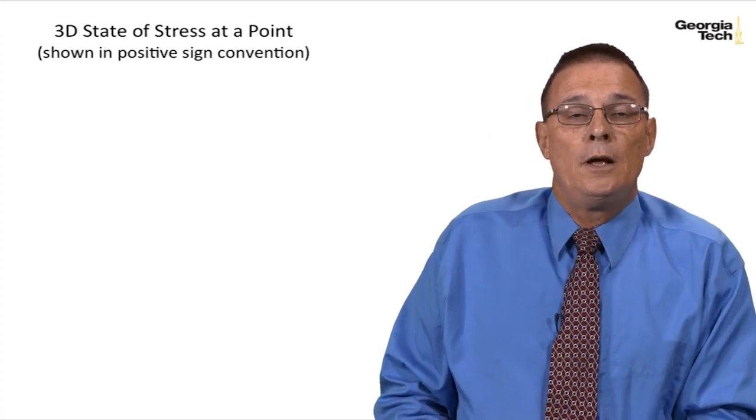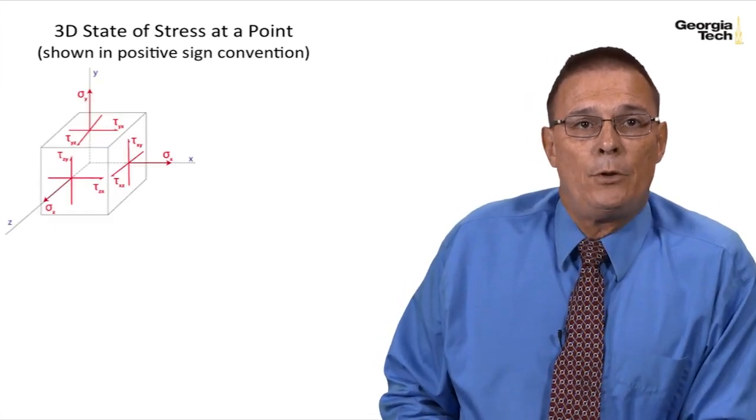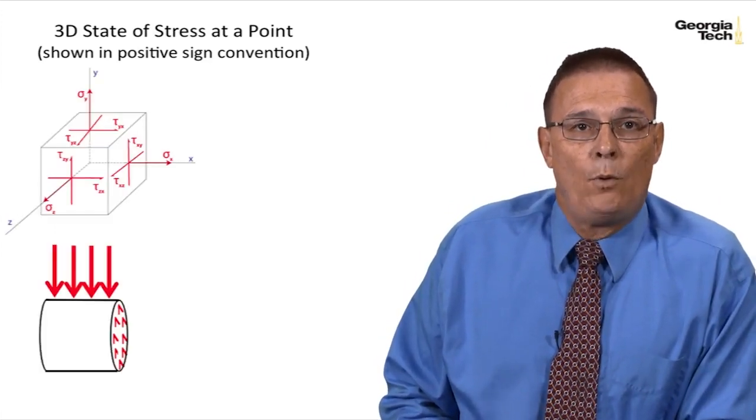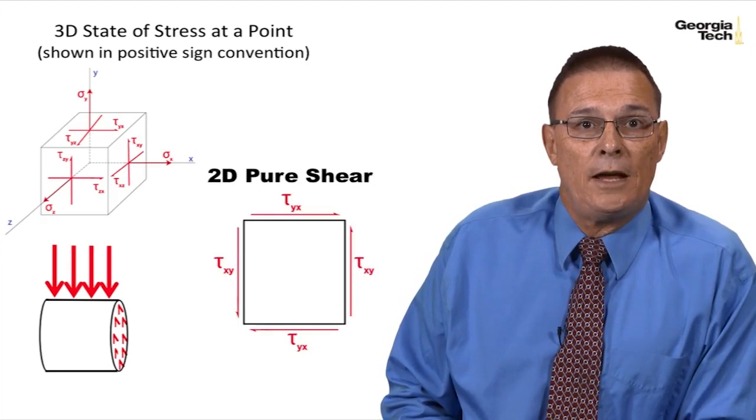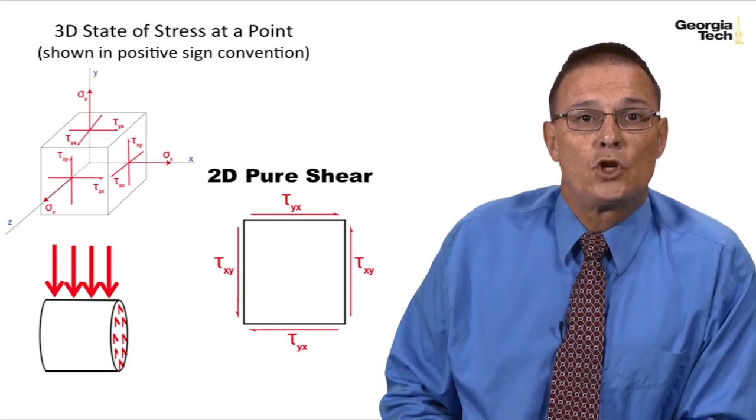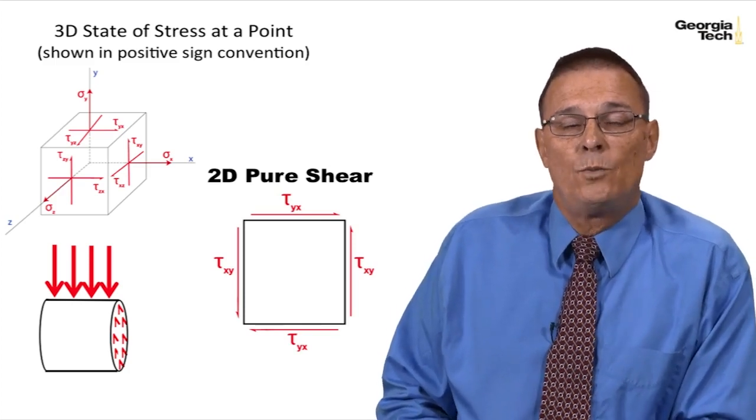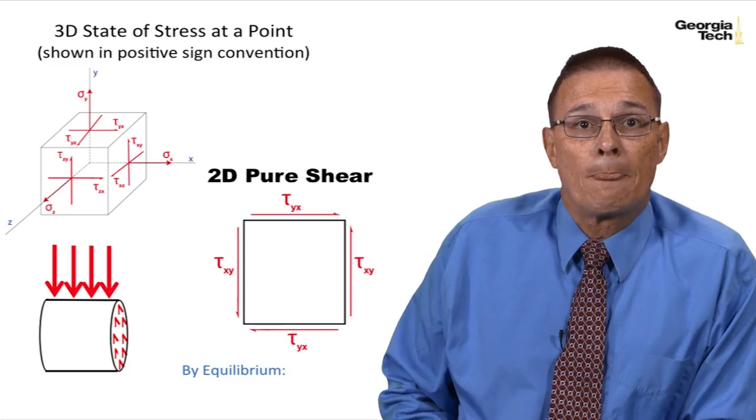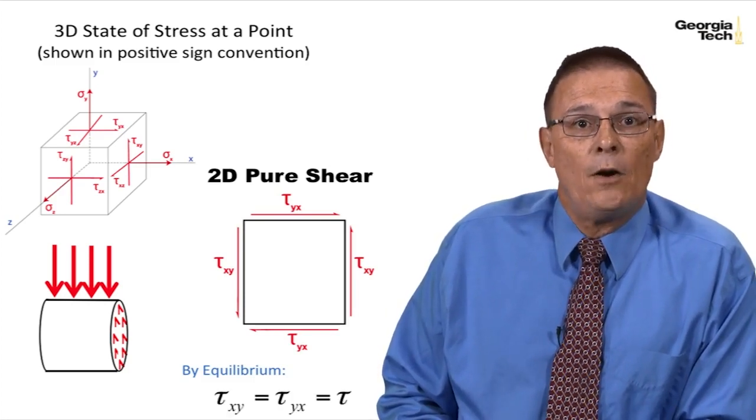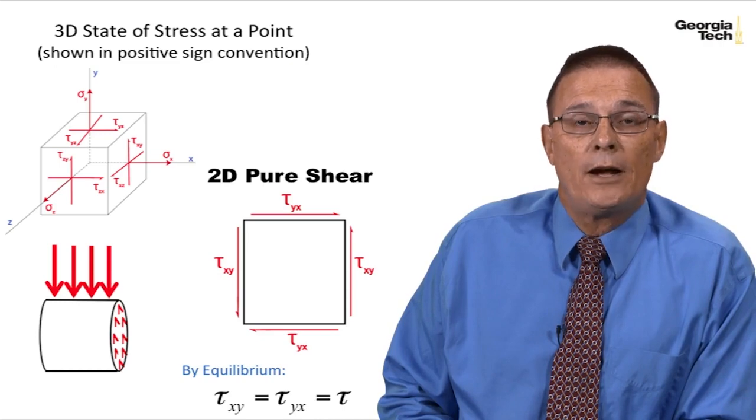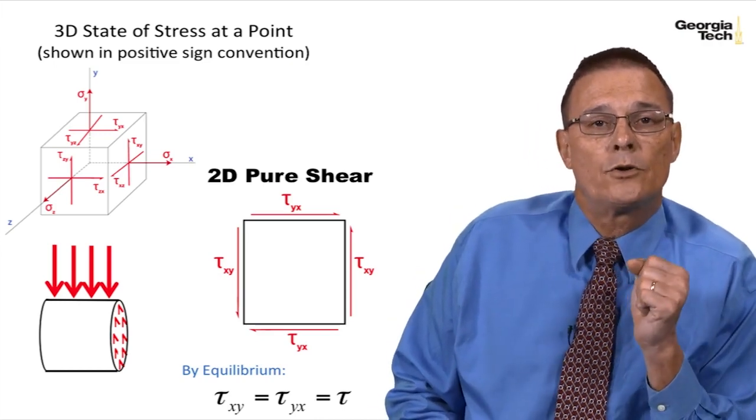And so here's where we left off last time. We showed a 3D state of stress at a point, and we looked at our member subjected just to shear stress, and we looked at just pure shear. And this is what the stress block looked like. And by equilibrium we said that the shear stress tau xy was equal to tau yx, or tau all the way around our stress element.